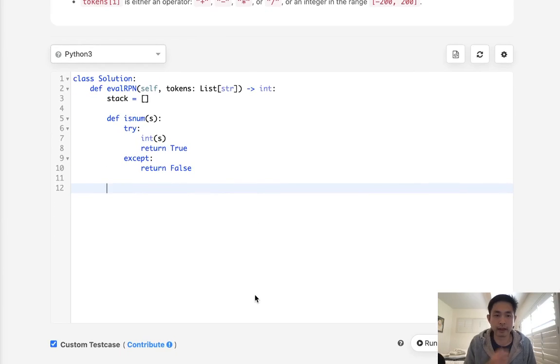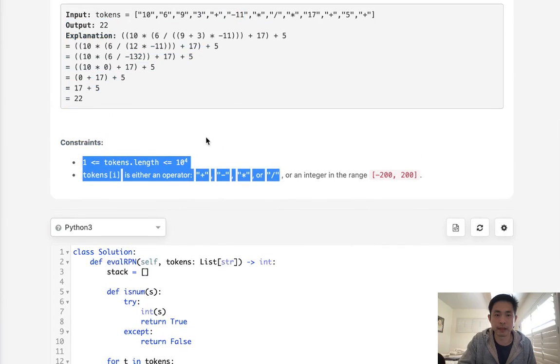So given that, for T in tokens, what do we do? Well, there's two conditions. If this T is a num, so isNum T, then we just add it to our stack. We just say stack append the T. Now, otherwise, it's going to be an operation, right? And we have four, so what we'll do is we need to have an if statement for all four of these.